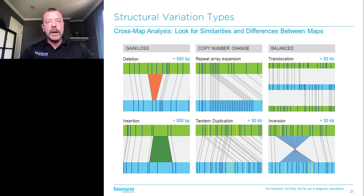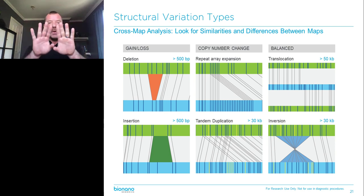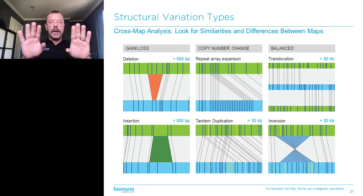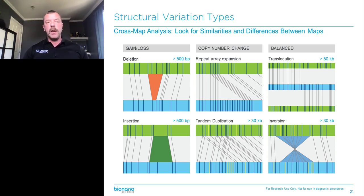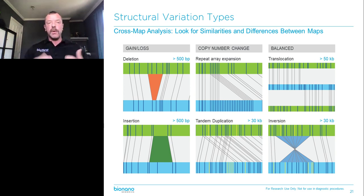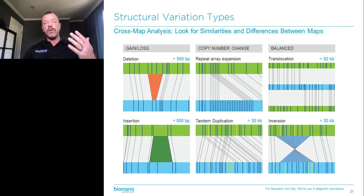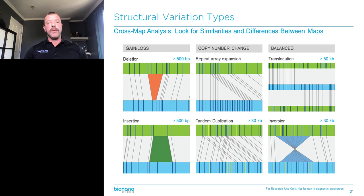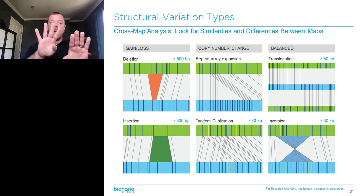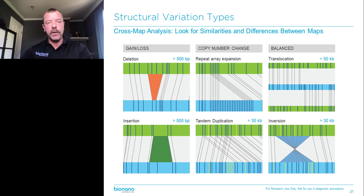We call every single major type of structural variant using this same mechanism. Deletions are called when the spacing between labels is moved closer together, and insertions similarly when spacing increases — automatically starting at 500 base pairs. We can look at repeat arrays, detect tandem duplications where a pattern is present in two copies next to each other, direct or inverted, starting at 30 KB. We can detect translocations where a novel map aligns half with one chromosome and half with another. And we can detect inversions starting at 30 KB as well, which are really hard to pick up with most methods because there's no gain or loss of material.